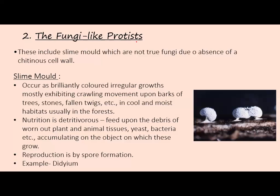Let's start with fungi-like protists. This includes slime molds, which are not true fungi due to the absence of a chitinous cell wall. True fungi have a chitinous cell wall, whereas slime molds lack chitin. Fungi-like protists have saprozoic or holozoic type of nutrition.